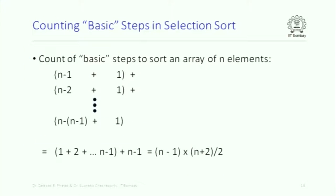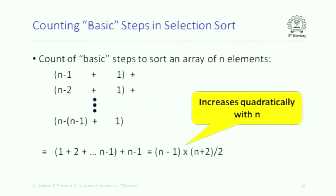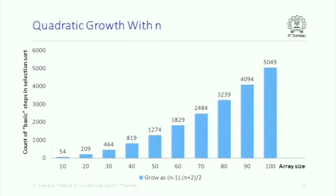So what is the total number of basic steps? Adding up all expressions — (n-1+1) + (n-2+1) + ... — and doing some simple algebra, it turns out to be (n-1)(n+2)/2. The important point is that this expression has a quadratic dependence on n — there is an n-squared in it. This increases quadratically with n. Plotting (n-1)(n+2)/2 for values of n from 10 to 100, you can clearly see the outline of a parabola, because this is a quadratic function.